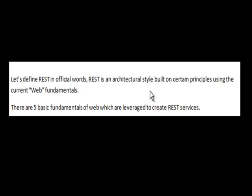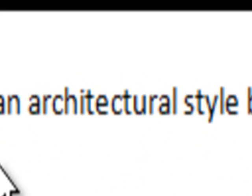Now let's spend some time talking about this word 'architectural style' because it needs more clarification. There are three things which are confusing: one is architectural style, the other one is architectural patterns, and the last one is design patterns. Architectural style means it's a concept, it's a theory. How you take this theory and implement it is all up to you. For example, three-tier is an architectural style, service-oriented architecture is an architectural style, REST is an architectural style. These are concepts, and how you take this concept and implement it is all up to you.